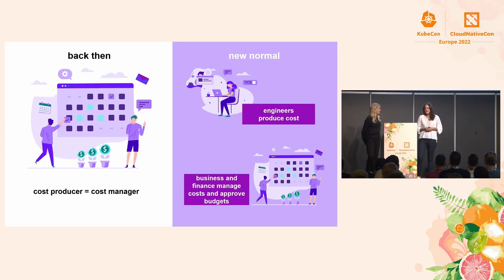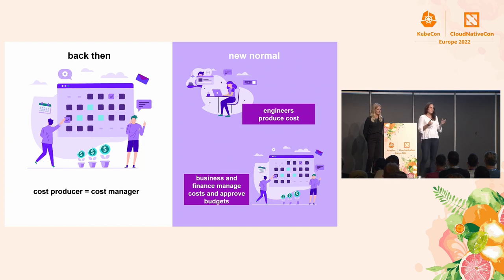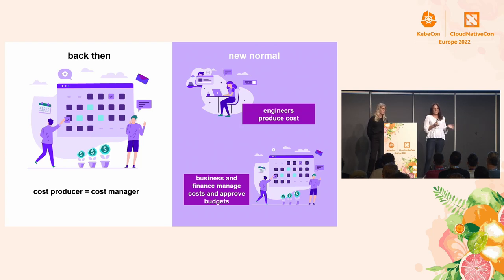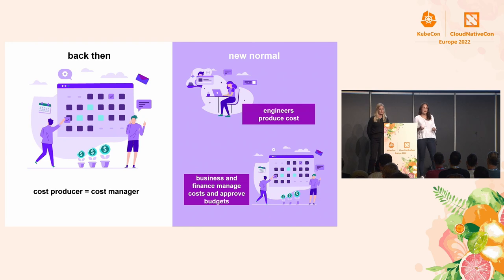It would be easy to just update these processes based on the variable cloud cost model. But to be honest, the business and the finance people don't really understand how the cloud works most of the time. And now Kubernetes comes in — that's a whole new abstraction layer on top of the cloud. That creates a huge knowledge gap between the technical and the non-technical people. Because how should they ever comprehend how Kubernetes costs work when they can't even comprehend the variable cost model of the cloud?